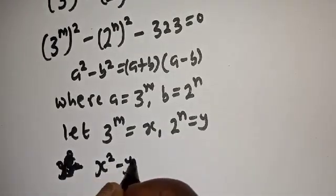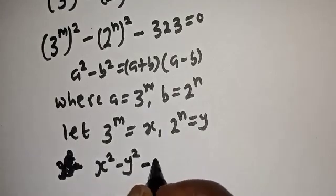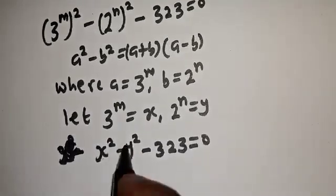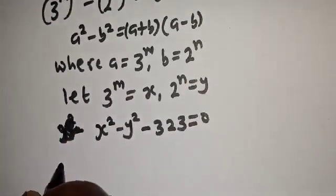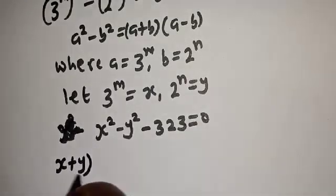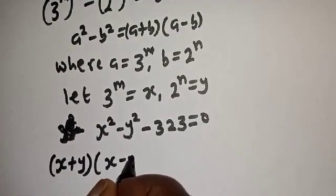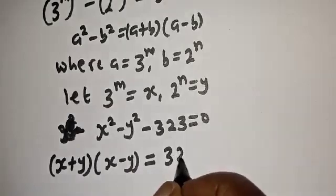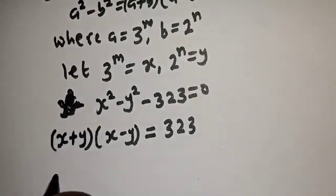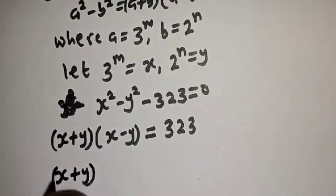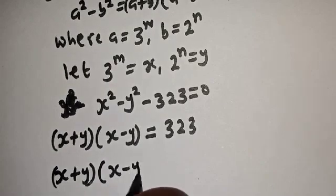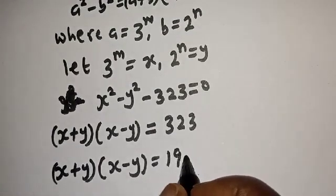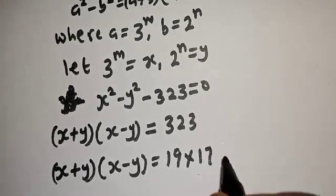So we have s squared minus y squared minus 323 equals 0. Let's replace this using the difference of squares. We have s plus y, bracket s minus y, equal to 323. This can be written as 19 multiplied by 17.